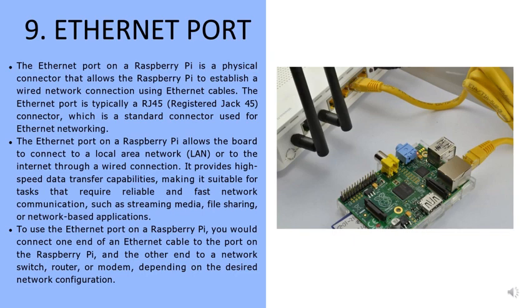The next component is the ethernet port, which is a physical connector that allows the Raspberry Pi to establish a wired network connection using ethernet cables. The ethernet port is typically an RJ45 connector, a standard connector used for ethernet networking. It allows the board to connect to a local area network or to the internet through a wired connection, providing high-speed data transfer capabilities suitable for streaming media, file sharing, or network-based applications.